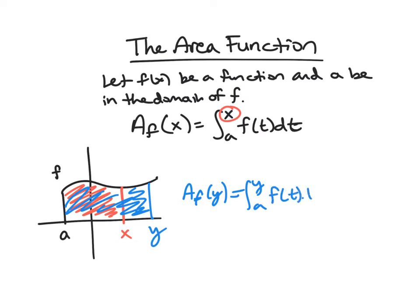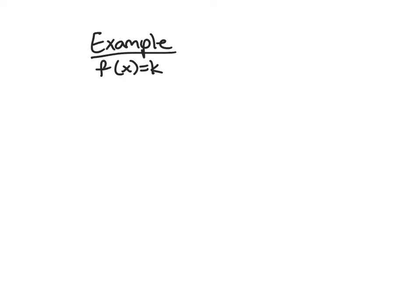You might wonder why we have t instead of x on the inside — why f(t) and not f(x). The reason is that x is the variable for the area function; it's changing the upper bound of integration, not changing the function f originally. We don't want x representing two different things, so we use t on the inside to avoid that double meaning.